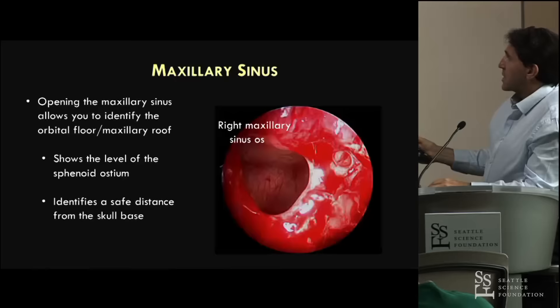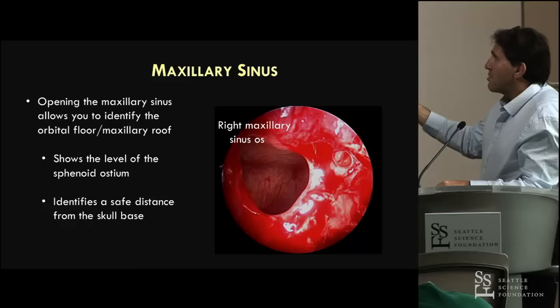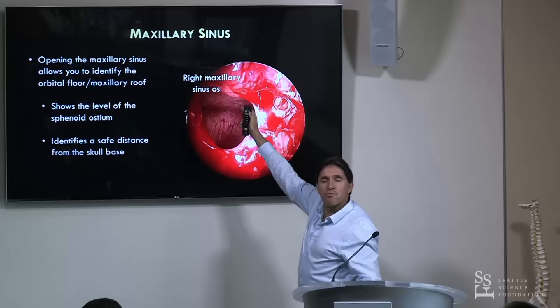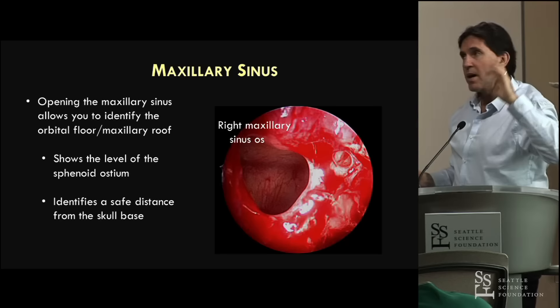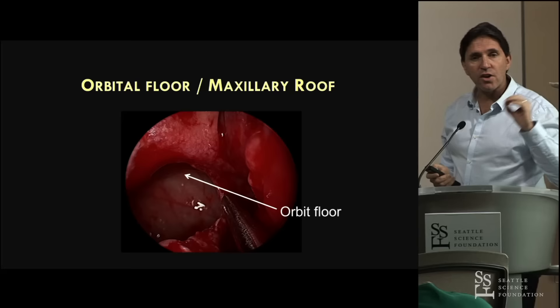You open the maxillary sinus and once it's open, I like to open it up so I can identify the orbital floor. Once I've got that orbital floor, it's always going to be in the view of my scope. I'm going to follow it straight back, because that's going to show me the level of the sphenoid ostium and give me a very safe working distance going through the ethmoid.